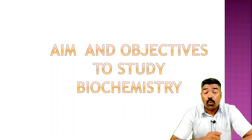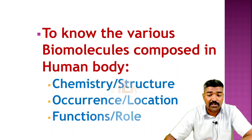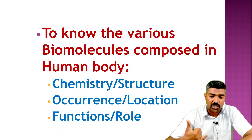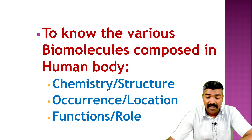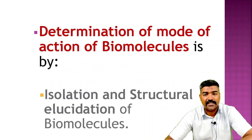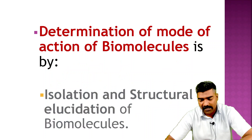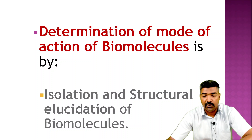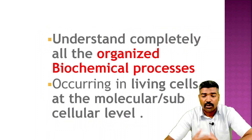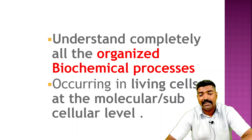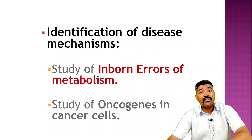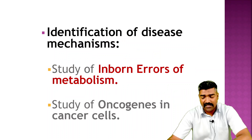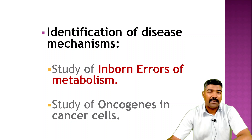Now, what is the aim and objective of studying biochemistry? First, to know the various biomolecules composed in the human body — their chemical structure, location, function, and role in different organs. Second, the determination of the mode of action of biomolecules through their isolation and structural elucidation. Third, to understand all organized biochemical processes occurring in liver cells at the molecular, sub-, and cellular levels. Fourth, the identification of disease mechanisms through study of inborn errors of metabolism and the study of oncogenes in cancer cells.